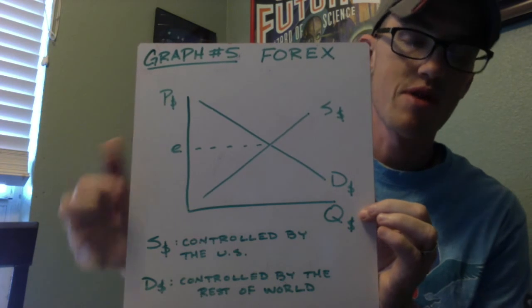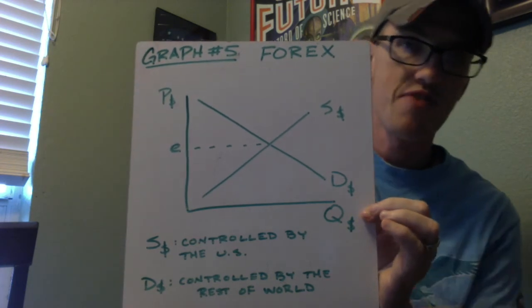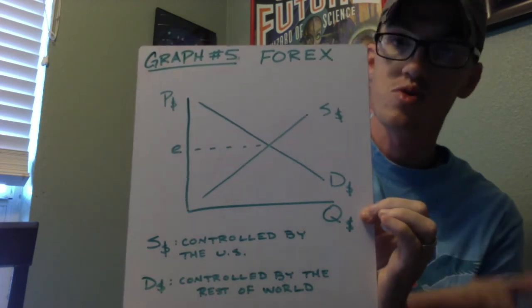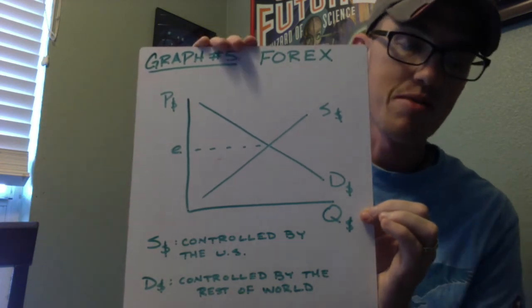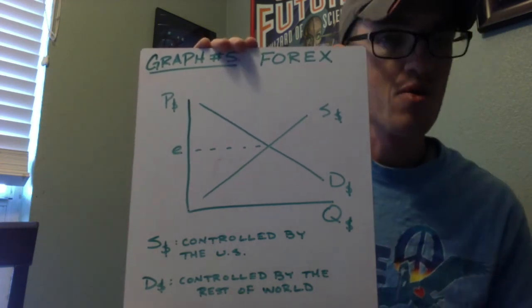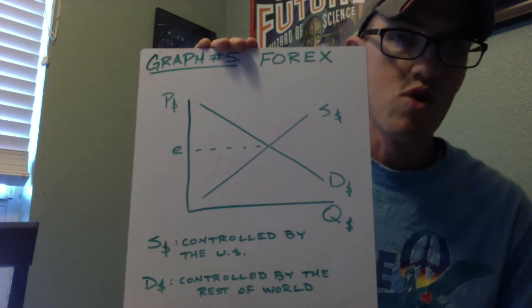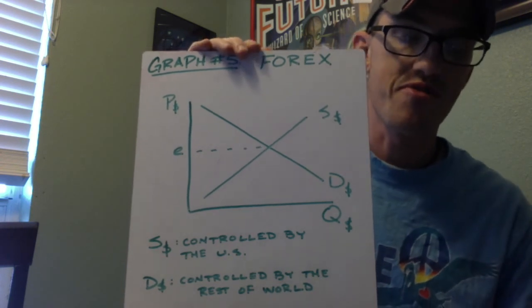You have a supply, upward supply slope, because as prices increase, there's more people willing to trade at those higher prices. And a downward sloping demand, because as prices go up, we'll hold on to our own currency because it's too expensive to trade.